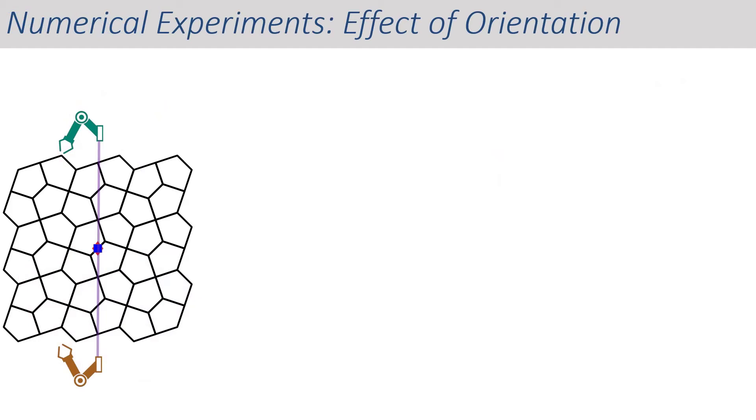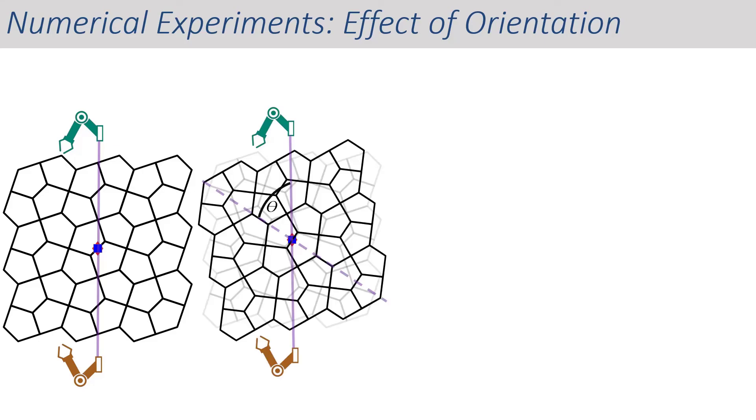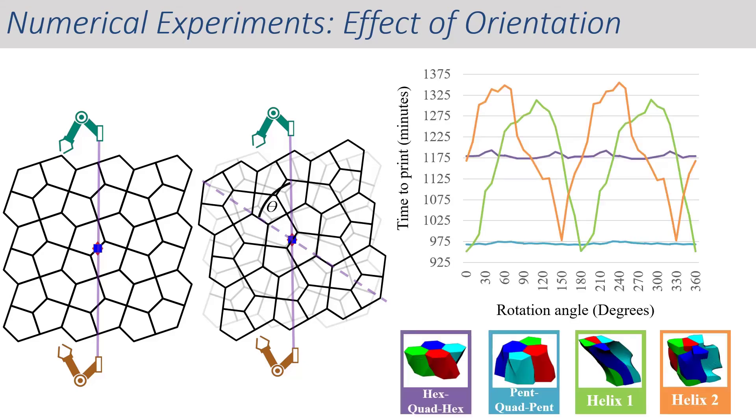We simulated the time that each test case would take to print based on the orientation of the part with respect to the printers. Rotating the assembly changes the cell distribution between robots, which impacts printing time. Hex-quad-hex and pent-quad-pent do not vary much in time to print.